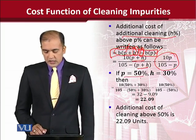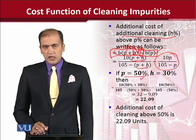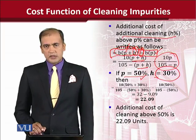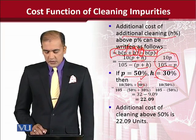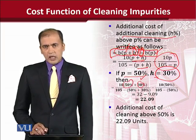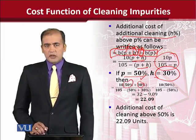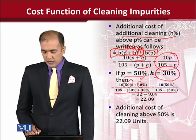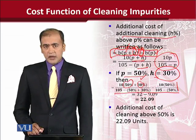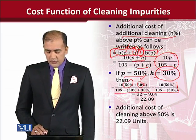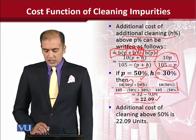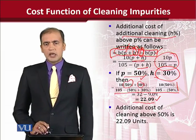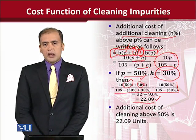Now, putting in the values: the certain level of cleaning is 50% and the additional level of cleaning is 30%, so in place of H I put 30% and in place of P I put 50%. The simplification is straightforward once we place values in the right positions. After simplification, we find that 22.09 units is the additional cost of cleaning.